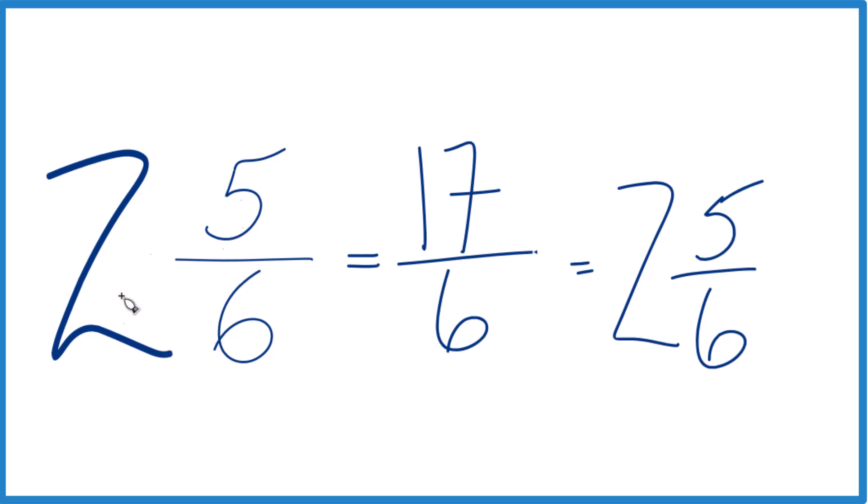So the mixed number 2 and 5/6 equals our improper fraction 17/6. These are equal numbers. They're equivalent. It's just that we've represented them differently here.